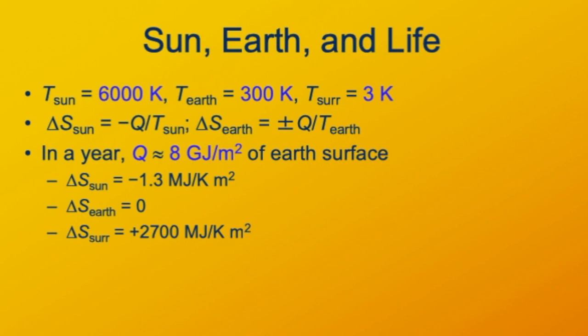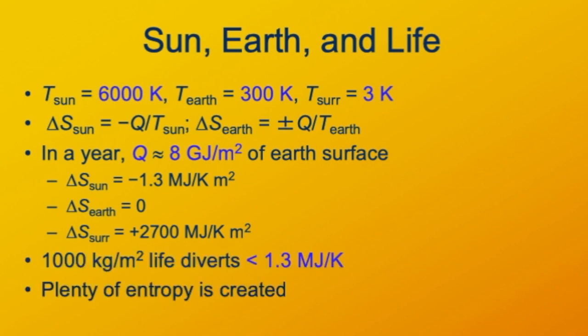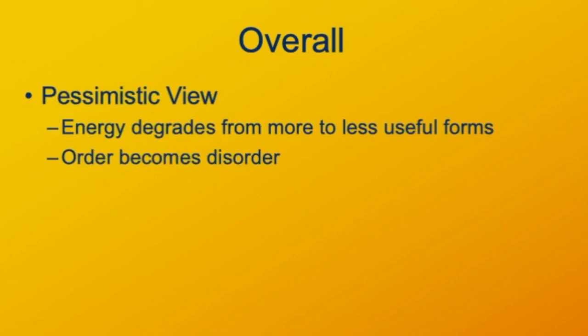I'd like to conclude with just a little philosophical comment on what the second law of thermodynamics is telling us. It's often interpreted as a rather pessimistic way saying that energy is always degrading from useful forms to less useful forms and order goes to disorder. And so we use that to think about the decay of any ordered system, the fall of any civilization, things like that. But that's not really what the second law of thermodynamics is telling us.